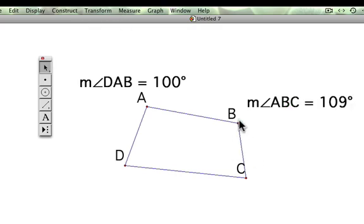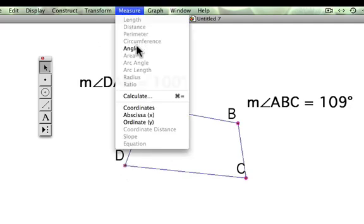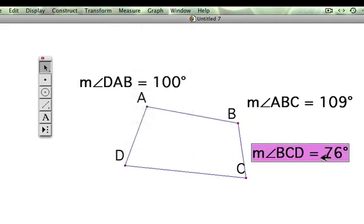We're now going to measure the angle at point C, which is BCD or DCB, and that's 76 degrees.